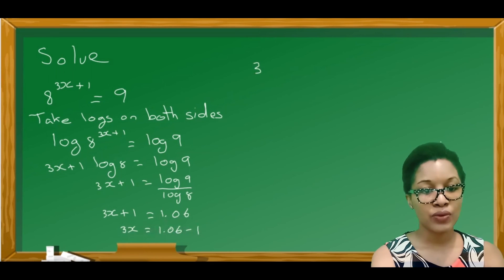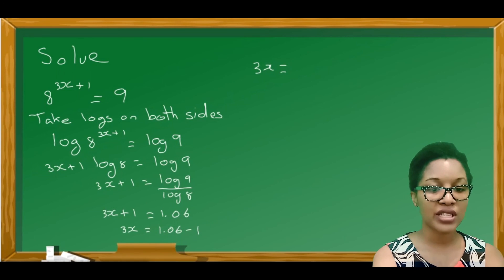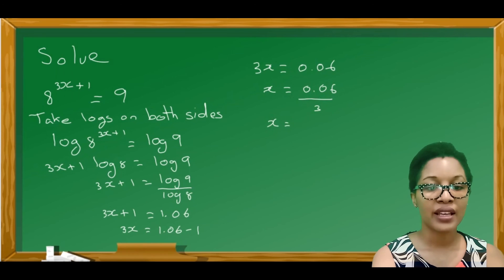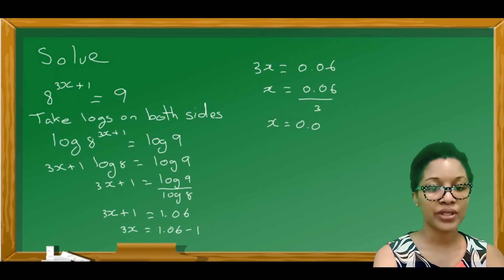Let's send the 1 on the next side, so it would be 1.06 minus 1. So 3x is equal to 0.06. And x is equal to 0.06 divided by 3. So x would be equal to 0.02.